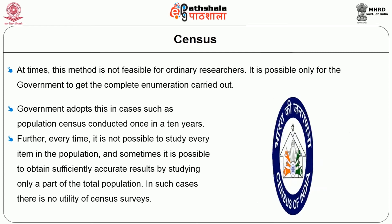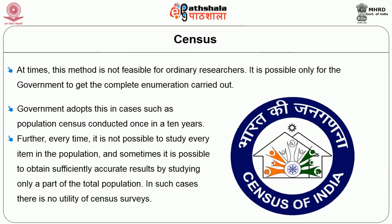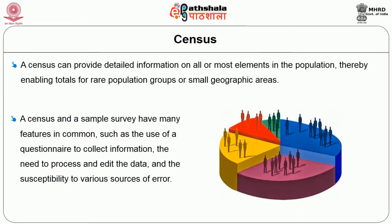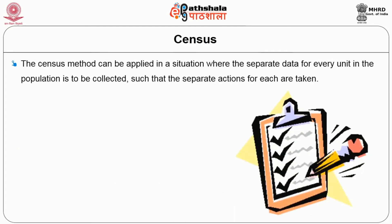It is not always possible to study every item in the population, and sometimes sufficiently accurate results can be obtained by studying only a part of the total population. A census can provide detailed information on all or most elements, enabling totals for rare population groups or small geographic areas. Census and sample surveys share many features in common, such as the use of a questionnaire to collect information, the need to process and edit data, and susceptibility to various sources of error.